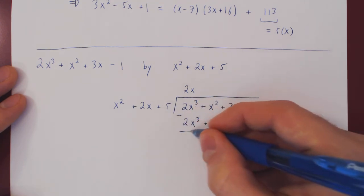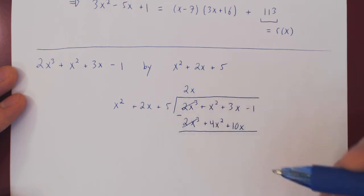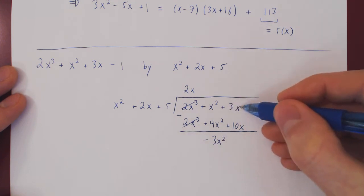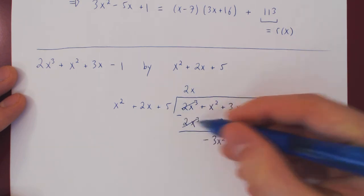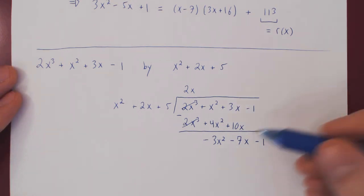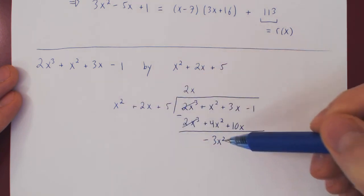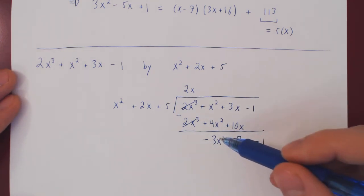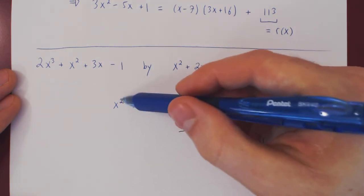3x minus 10x is negative 7x. Negative 1 minus 0 is negative 1. Are we done? The degree of the remainder is 2 and the degree of the divisor is also 2 — they're equal. We have to keep going. We are done with long division once the degree of the remainder is strictly smaller than the degree of the polynomial we're dividing by.